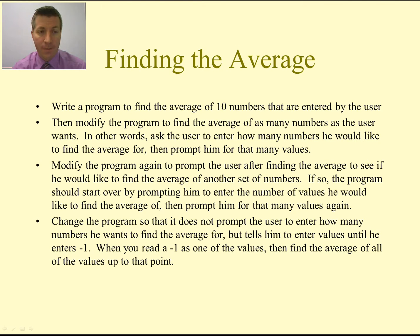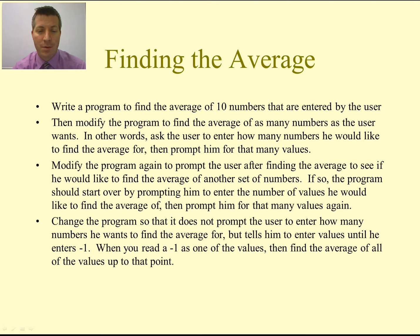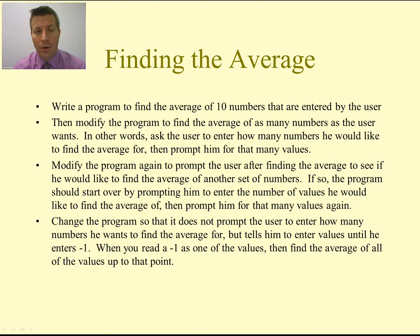There are four bullet points for this program. The first one: write a program to find the average of ten numbers that are entered by the user. Then we're going to modify it to find the average of as many numbers as the user wants — we'll prompt them and ask how many numbers they'd like to find the average for, then find the average of that many numbers.